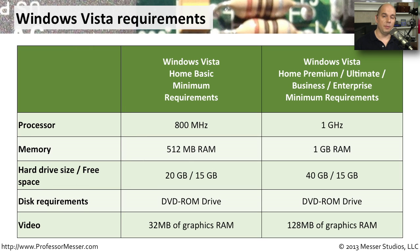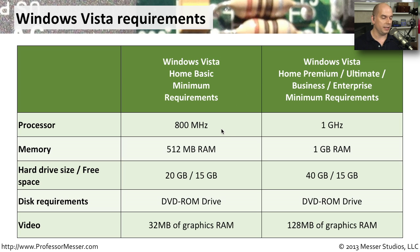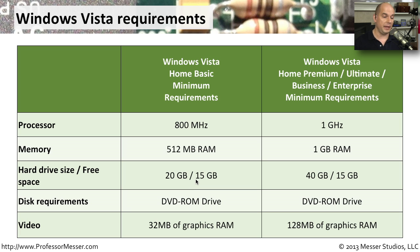When you're considering the minimum hardware requirements for Windows Vista, we separate this into Windows Vista Home Basic and all of the other editions — the Home Premium, Ultimate, Business, and Enterprise. If you're running Windows Vista Home Basic, you need an 800 megahertz processor with 512 megabytes of RAM at a minimum. You'll need a 20 gig hard drive with at least 15 gig of space available, a CD-ROM drive, and a video adapter with at least 32 megabytes of RAM.